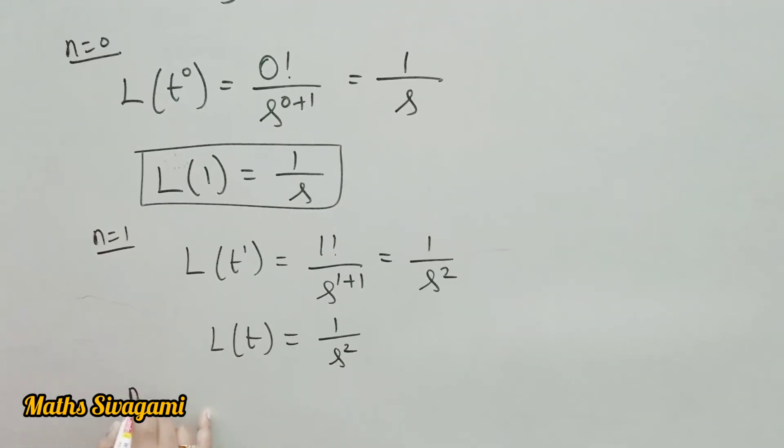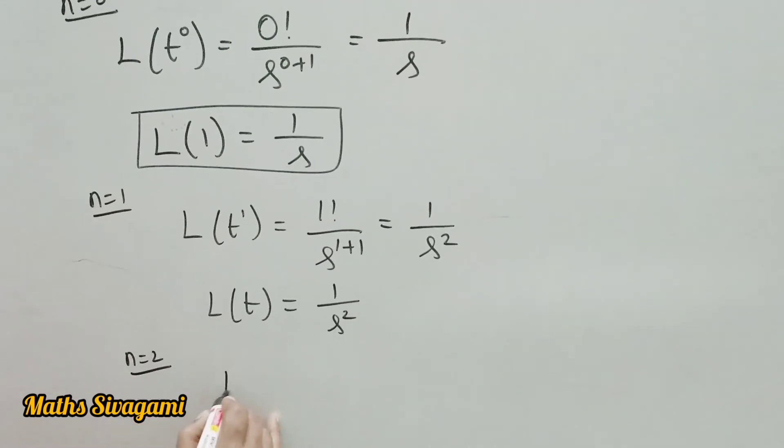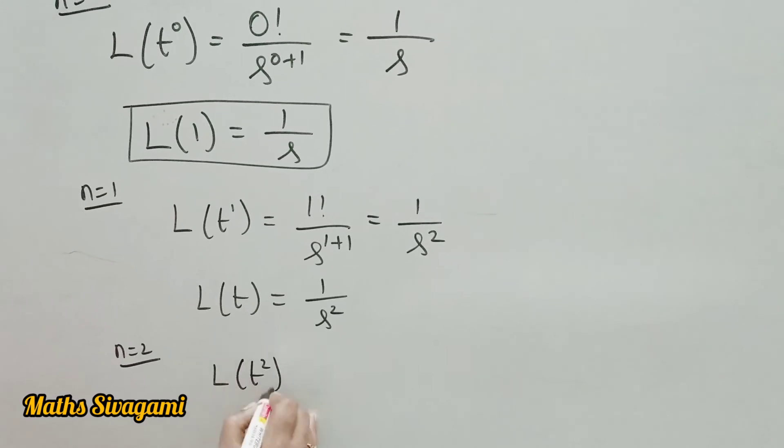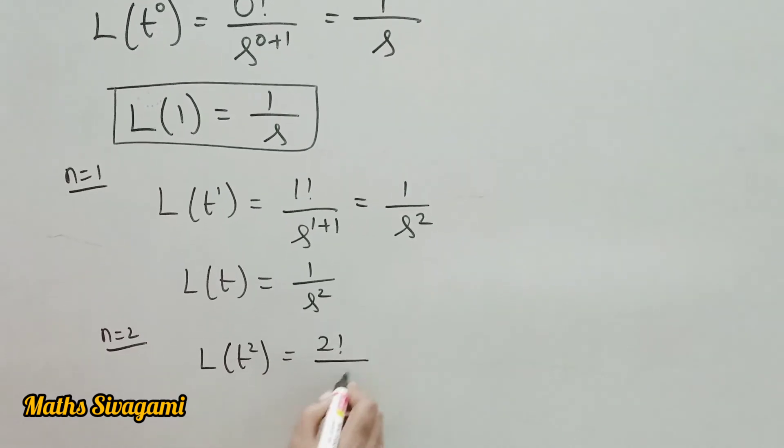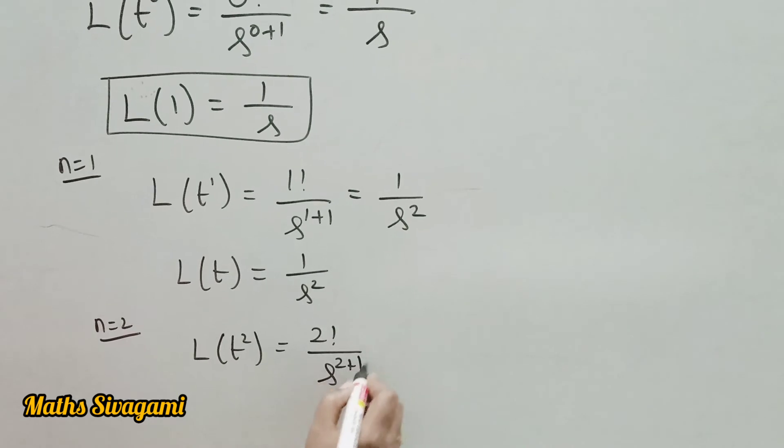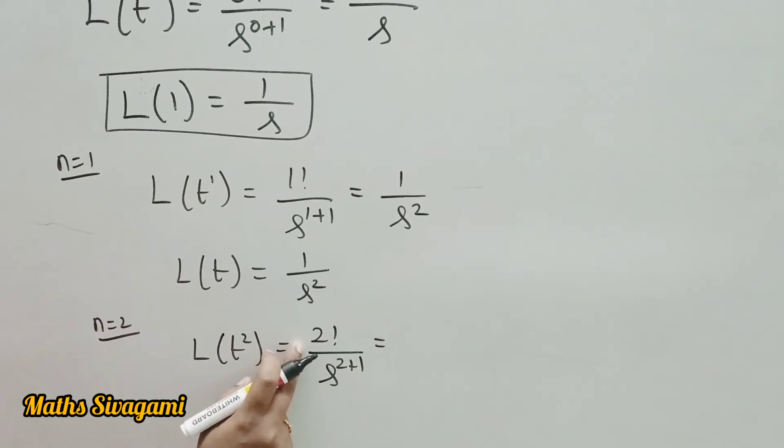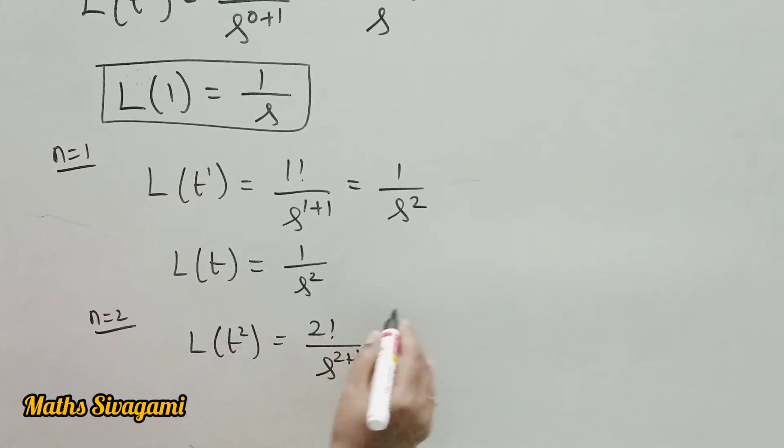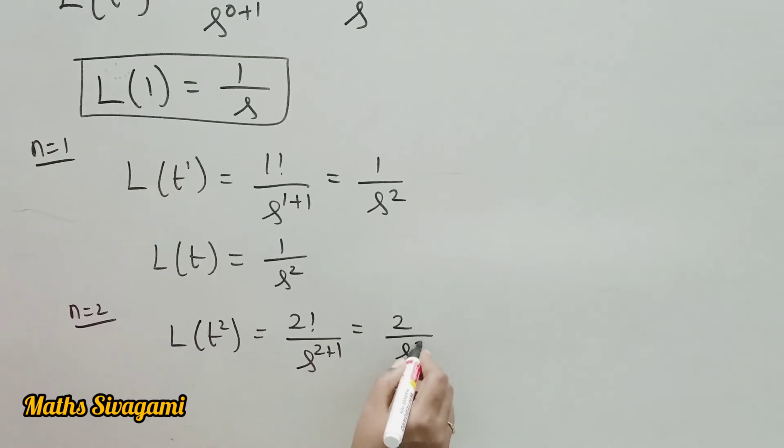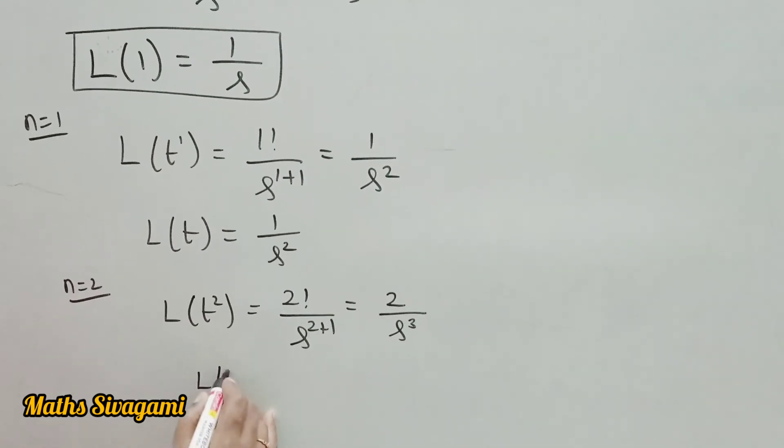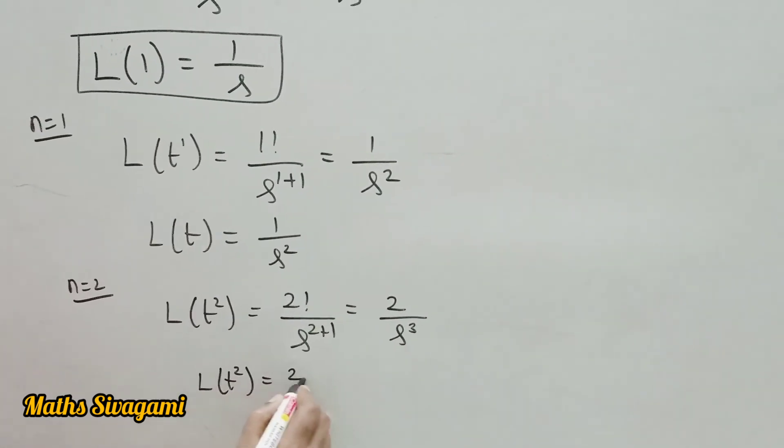If I put n is equal to 2, I will get L of t square, that is Laplace of t square, equal to 2 factorial divided by s power 2 plus 1. 2 factorial means 1 into 2, that is 2 by s cube. Therefore, Laplace of t square is equal to 2 by s cube.